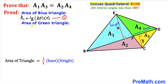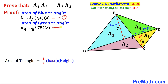Now let's calculate the area of this green triangle. Its base is FD and the height is X. So the area A sub 4 equals one half times DF times X. Let's call this equation number two.